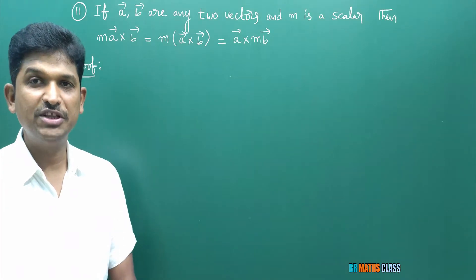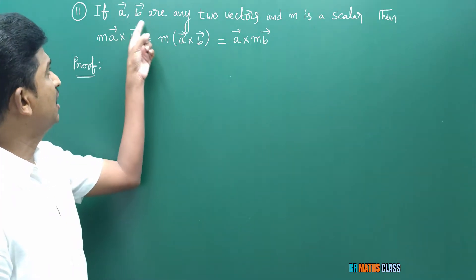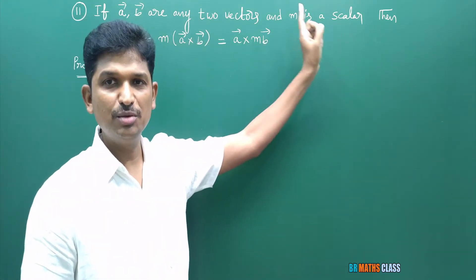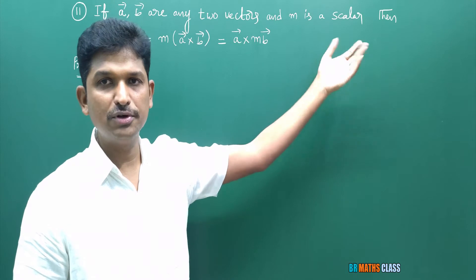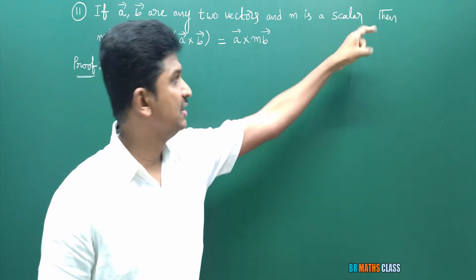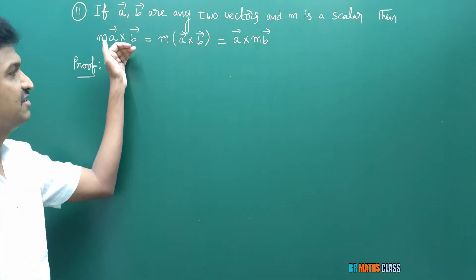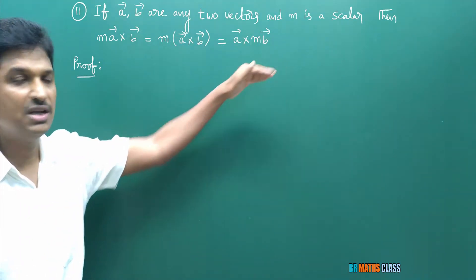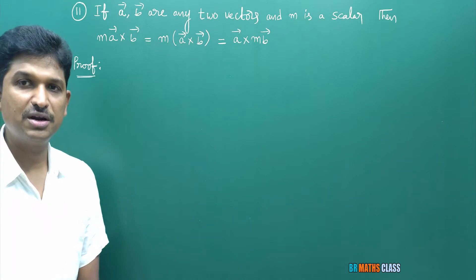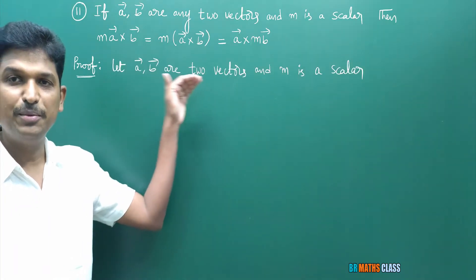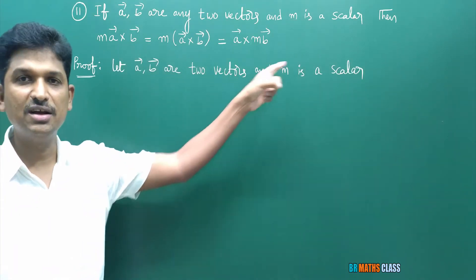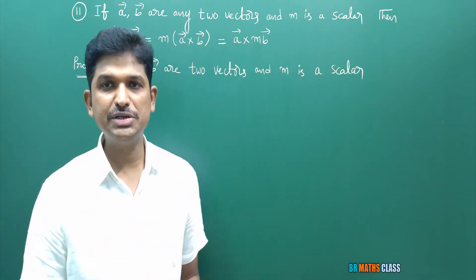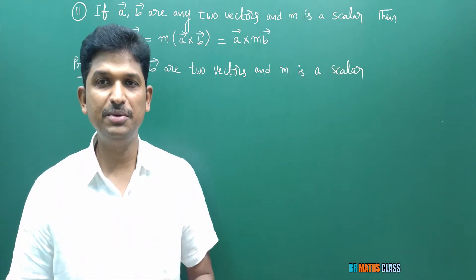This is the 11th property. If a̅ and b̅ are any two vectors and m is a scalar — scalar means it's a constant, it may be negative, positive, or zero — then m·(a̅ × b̅) = m(a̅ × b̅), and a̅ × (m·b̅) is also m(a̅ × b̅). Let a̅ and b̅ be any two vectors and m be a scalar, meaning m may be positive, negative, or zero.